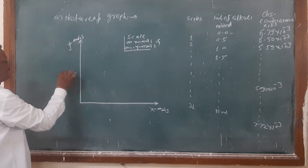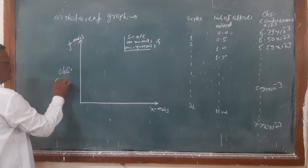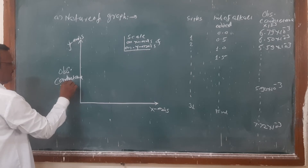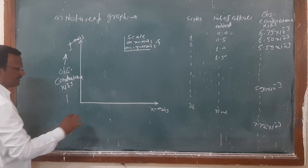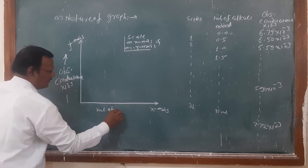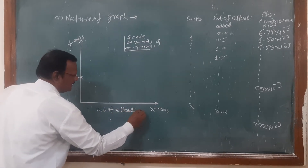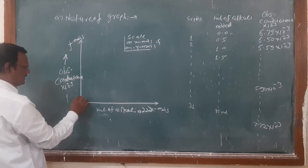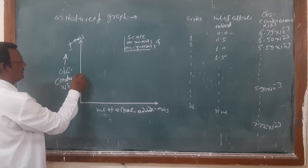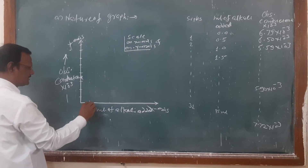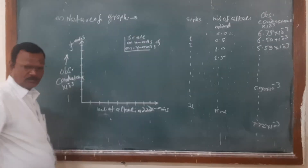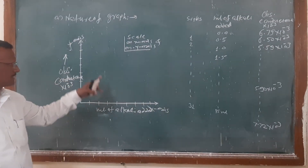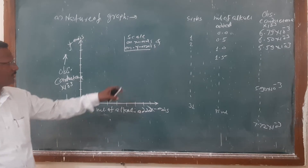On the y-axis, we write the observed conductance in units of 10 raise to minus 3. On the x-axis, we write the millilitres of alkali added. We make the markings accordingly, and then according to our observation table, we plot the nature of the graph.